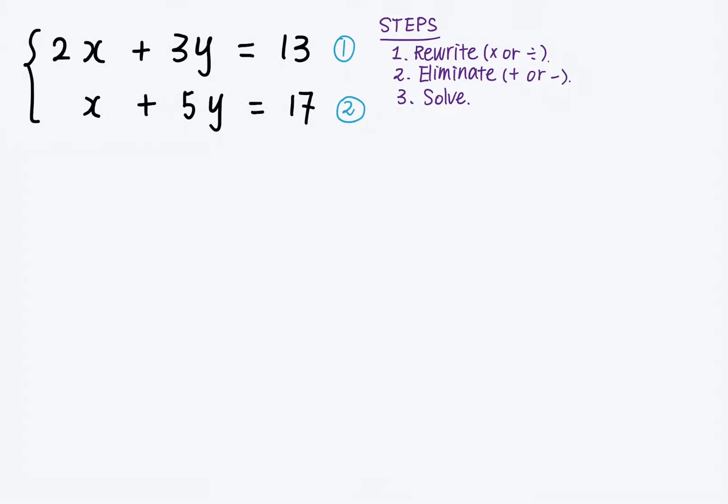So looking at this question, we noticed that the like terms cannot be eliminated straight away. So this requires us to rewrite the equations so that we can eliminate one variable. Since the two coefficients for x are 2 and 1, I'm going to rewrite the second equation by multiplying every term in the second equation by 2.